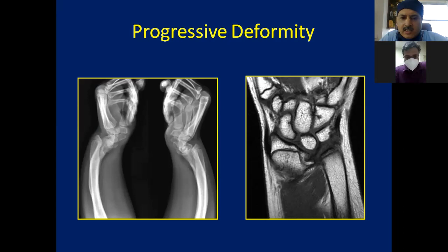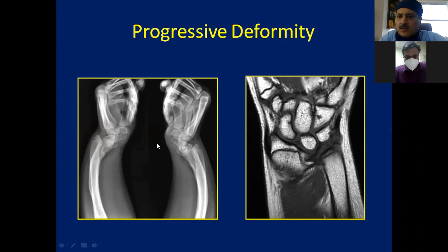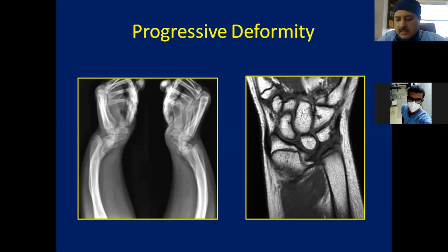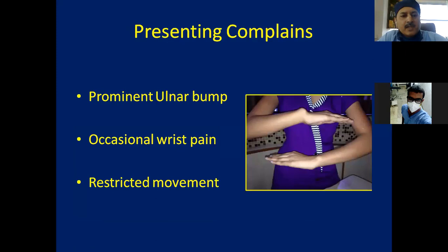In Indian patients, most present to us after 10 years with already progressed deformities. The prominent ulnar tip is cosmetically apparent, and that cosmetic appearance brings them to doctors rather than pain and restricted range of motion. On MRI, the ulnar side of the radial physis appears sick and prematurely closed. Some patients also have a radio-triquetral ligament that needs release during surgery. Presenting complaints are three: prominent ulnar bump, occasional wrist pain, and restricted dorsiflexion and supination.